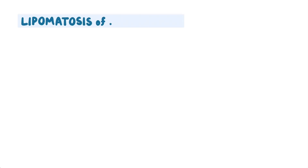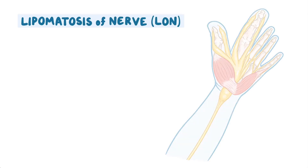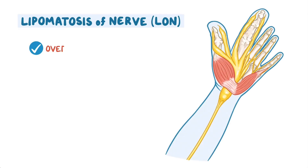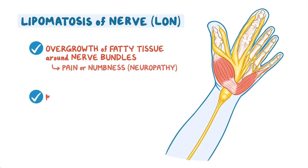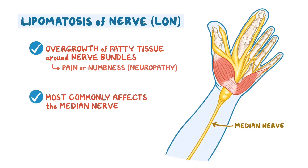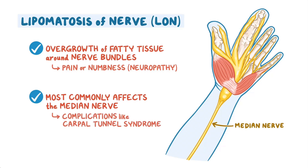In lipomatosis of nerve, or LON, there is overgrowth of fatty tissue around nerve bundles causing pain or numbness, called neuropathy. It most commonly affects the median nerve, which controls the forearm, leading to complications like carpal tunnel syndrome.